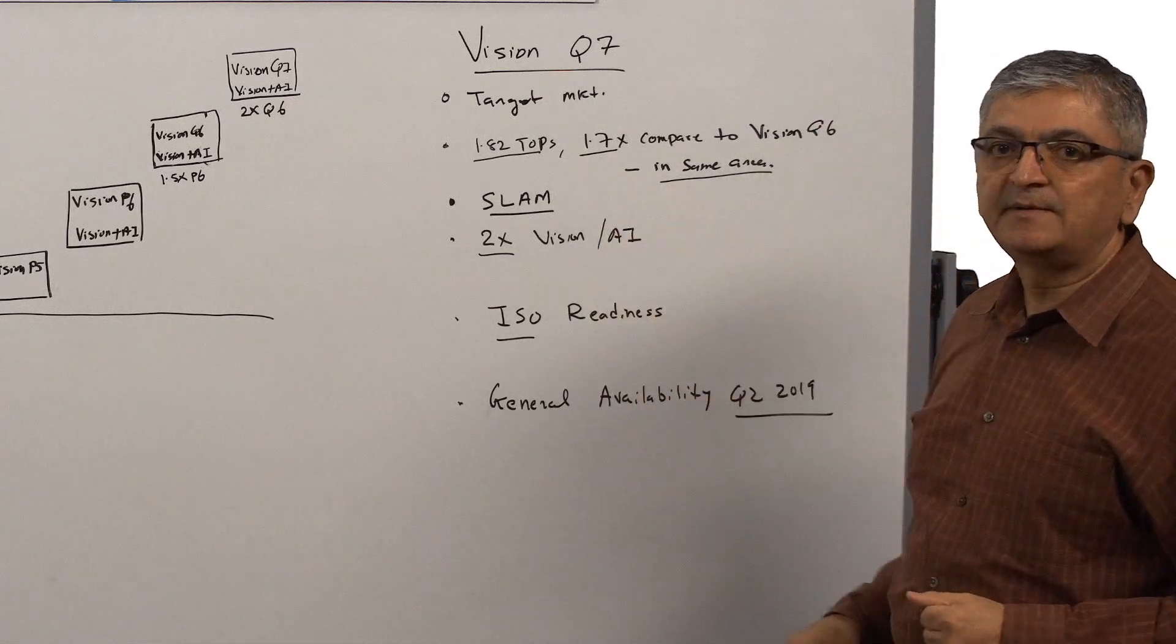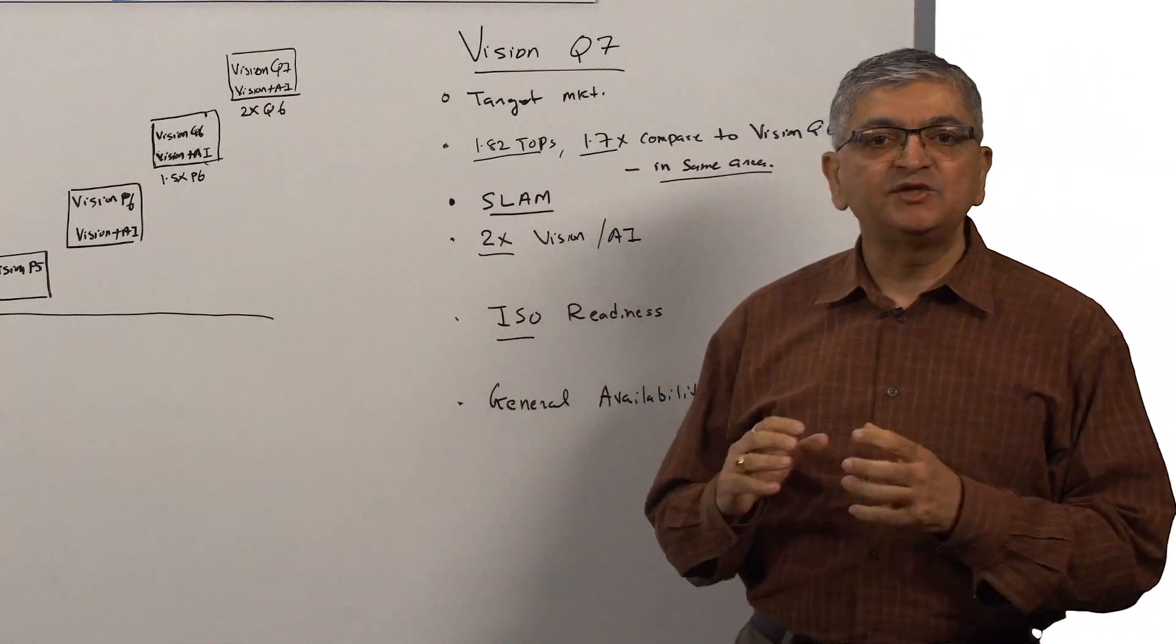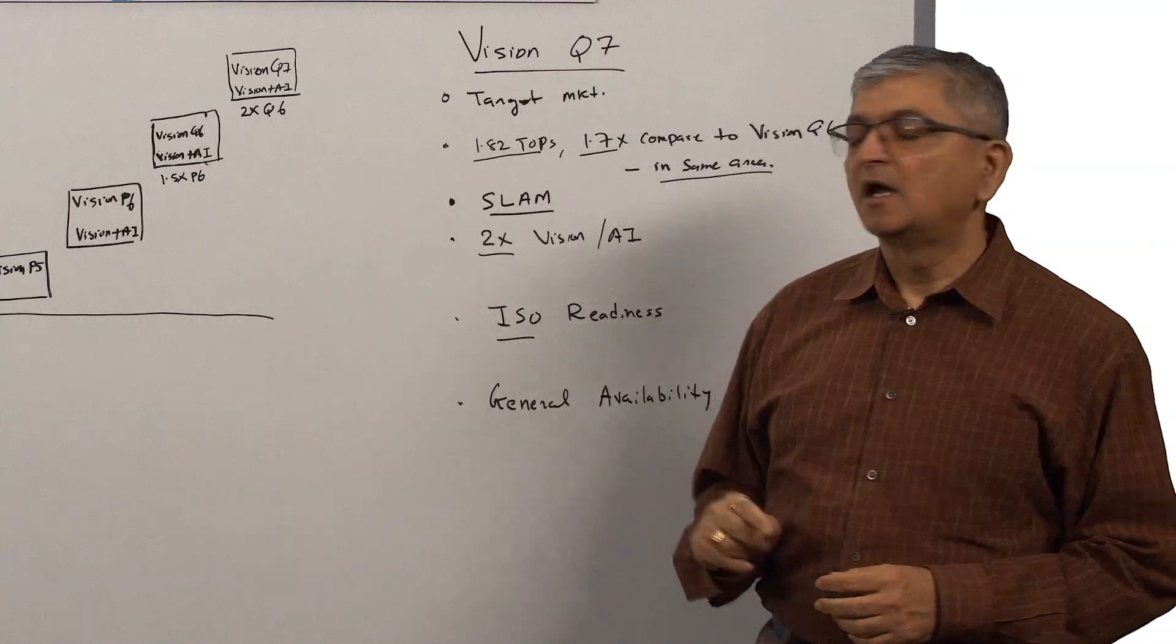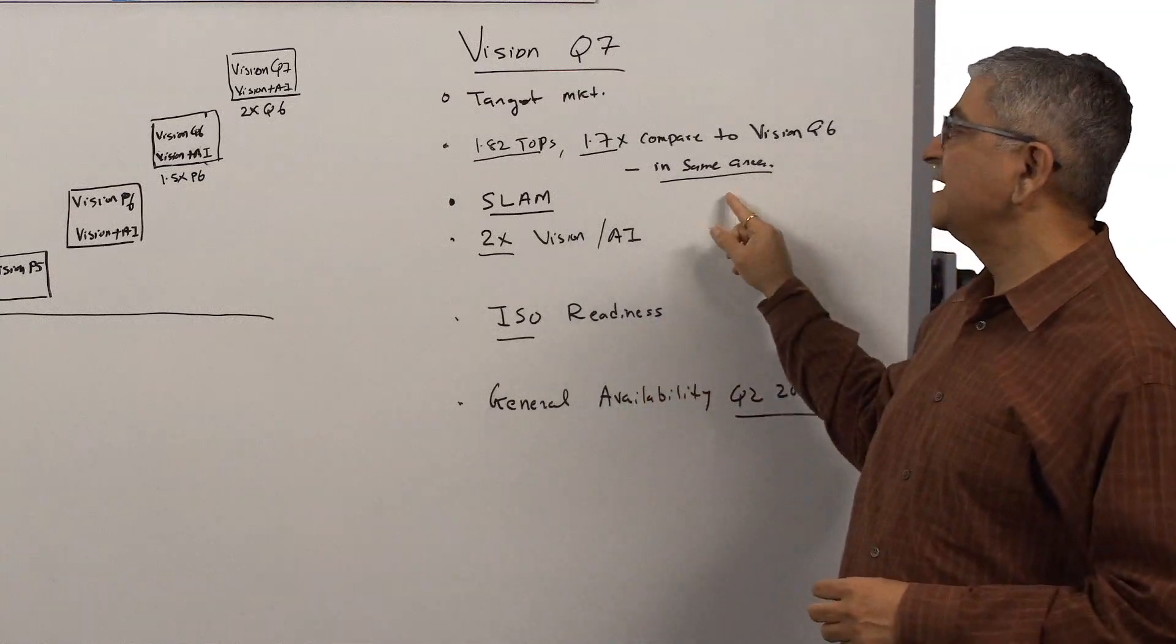In Vision Q7, we are offering 1.82 teraops, which is 1.7x higher compared to Vision Q6 in the same area.